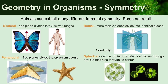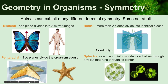Sponges are notorious for their asymmetry. They grow in weird, wacky ways and they usually don't have any kind of symmetry. But here are some general patterns of symmetry in nature. Obviously we have bilateral symmetry, which is shown in humans. It's when one plane can divide the organism into two mirror images.